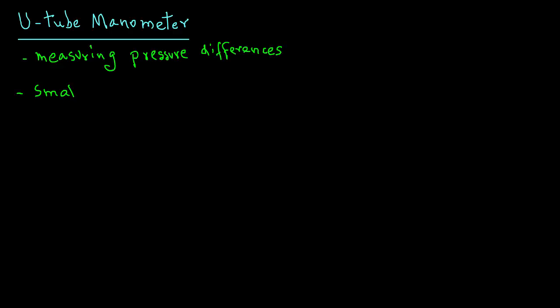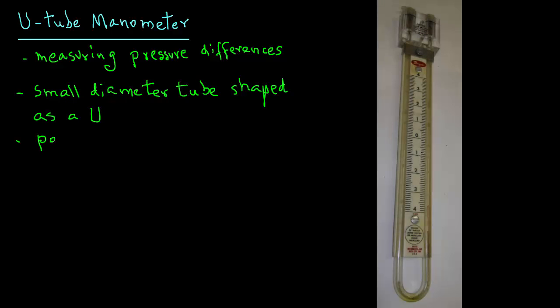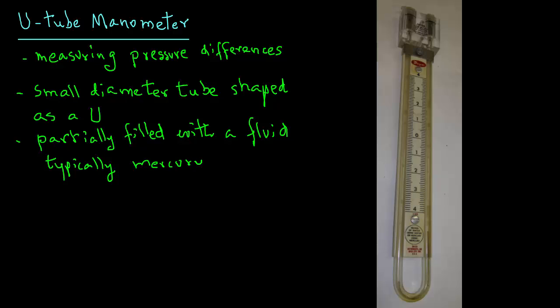A U-tube manometer is essentially a small diameter tube shaped as a U. It is partially filled with a fluid, which we call the manometer fluid. Typically, that fluid is mercury or a fluid of known density.